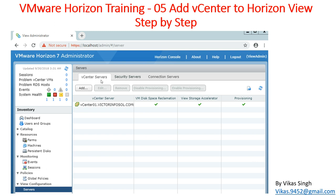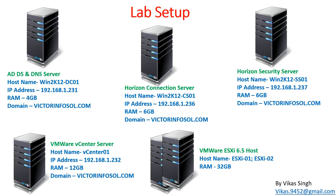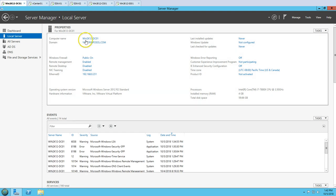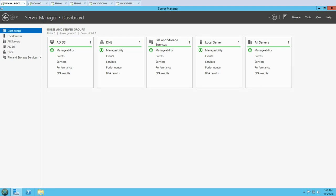Let's see what the lab setup is for this environment. We are using basically six physical machines acting as physical hosts in this lab infrastructure. The first machine is the Active Directory and DNS server, which is win2k12dc01. You can see this is my Active Directory and DNS server - local server win2k12dc01 - and this is running Active Directory and DNS.